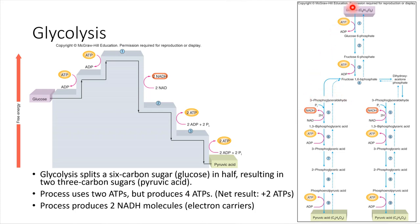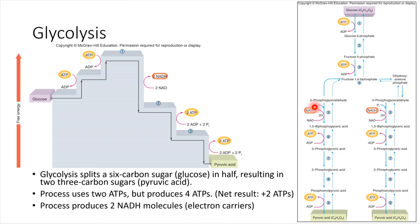What happens after glucose has been split and processed into pyruvic acid molecules? In order for the process to continue, we need to free up our NAD molecules. Right now they are clogged up with a hydrogen and an electron, so they can't accept any more hydrogens. The next step ordinarily would be for these NADH molecules to head off to a mitochondria and donate their electrons to the electron transport chain — we'll get to that shortly. But suppose that's not possible. What if there's no place for NADH to go and it stays clogged, unable to accept more hydrogens?